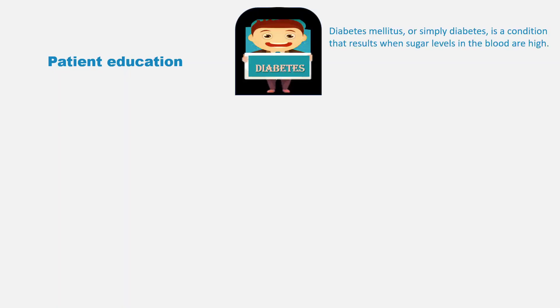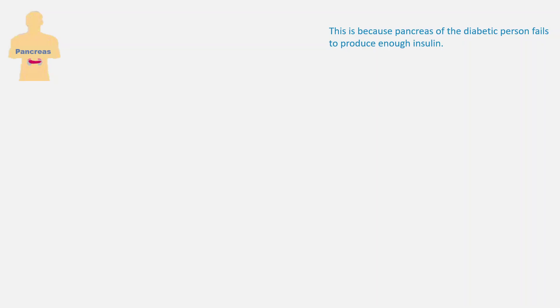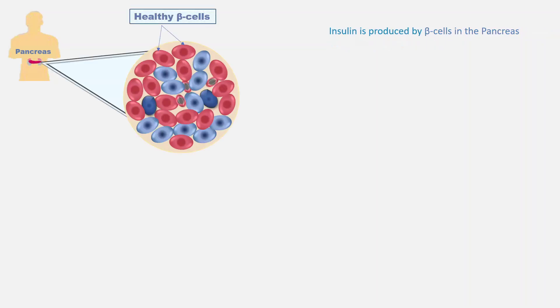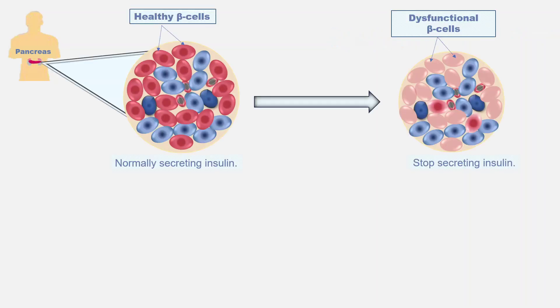This is Dr. Veneso. Diabetes, or simply diabetes mellitus, is a condition that results when sugar levels in the blood are high. This is because the pancreas in a diabetic person fails to produce enough insulin. Insulin is produced by beta cells in the pancreas.